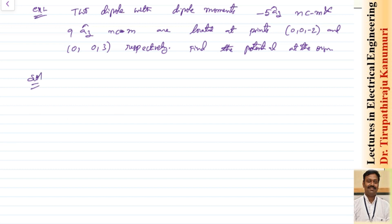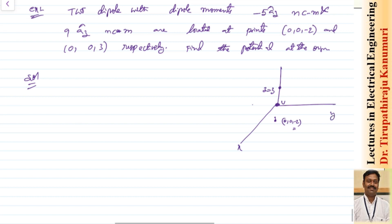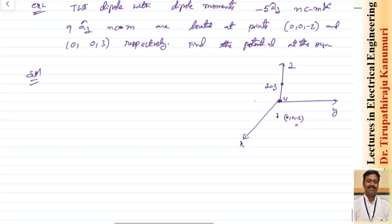To solve this, two dipole moments are given. One is at point (0, 0, minus 2) — in the Z axis it is at minus 2 — so there is a dipole there. There is one more dipole at (0, 0, 3). So at z equal to 3 there is one dipole and z equal to minus 2 there is another dipole. I want to calculate what is the potential at the origin.